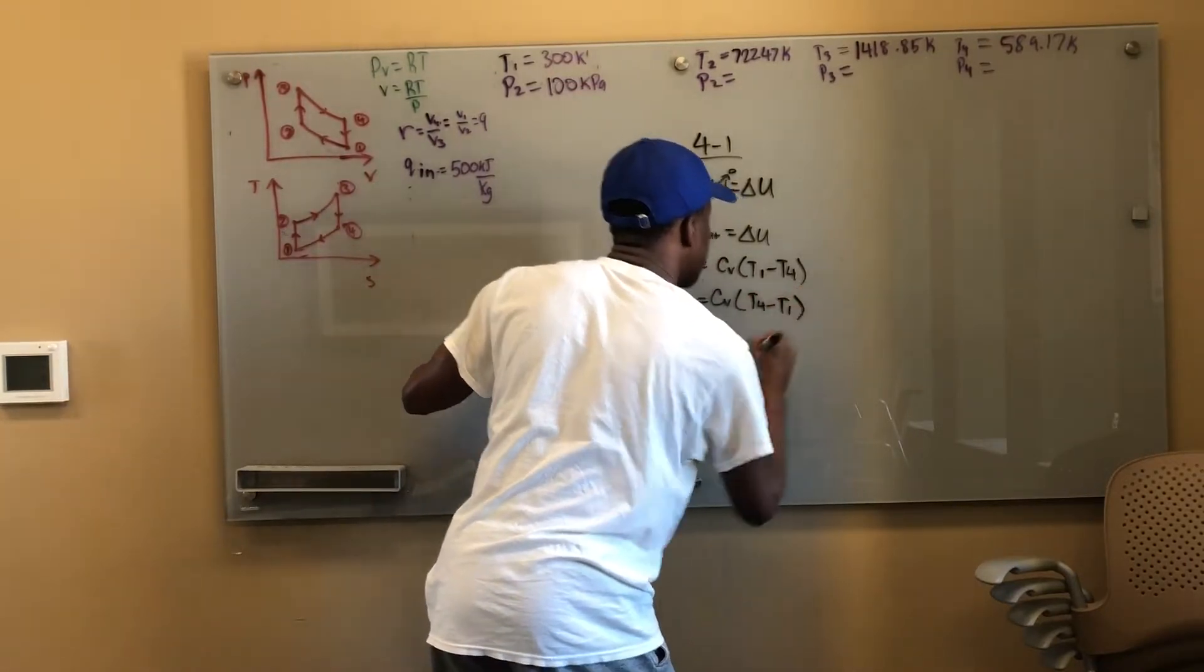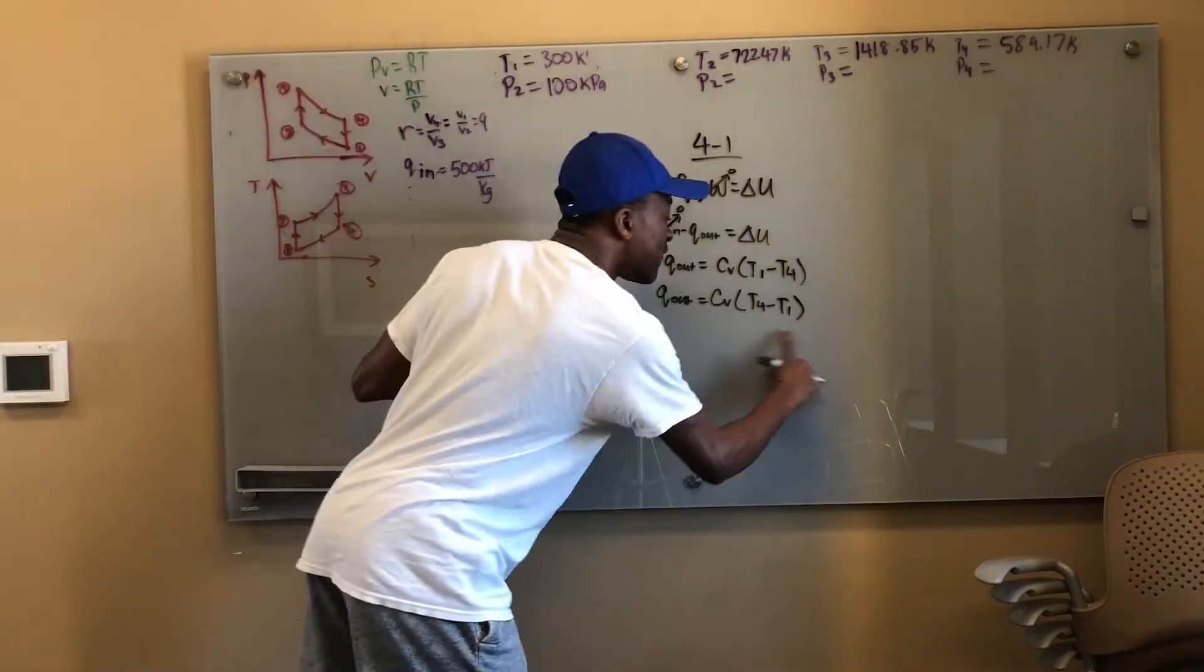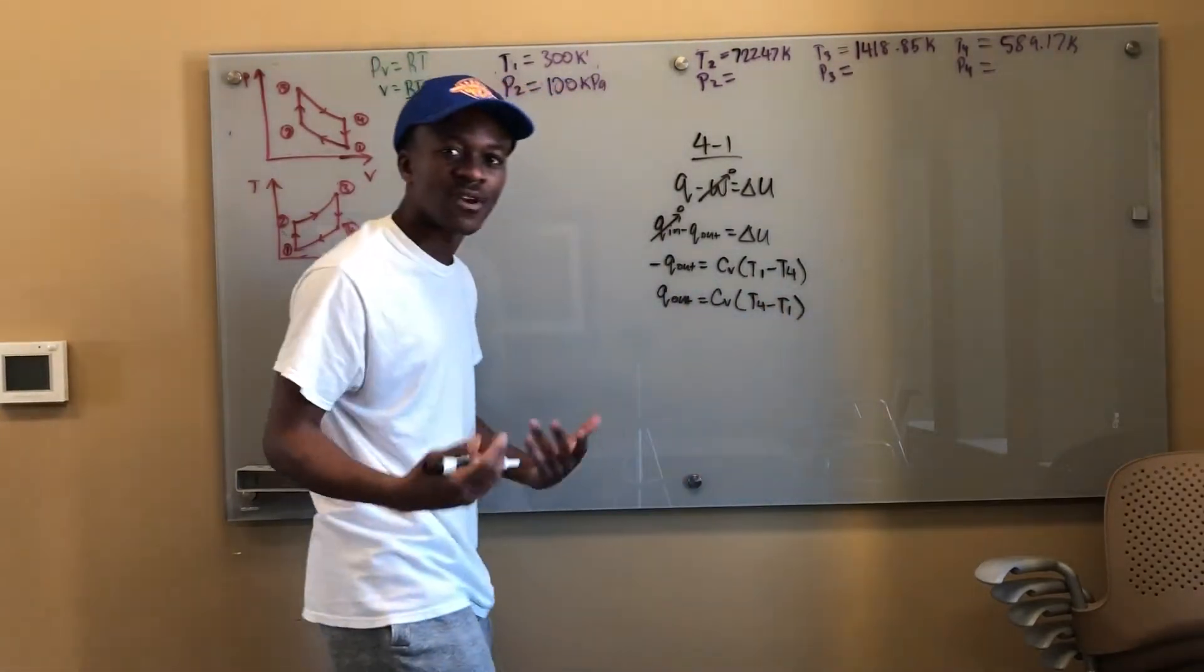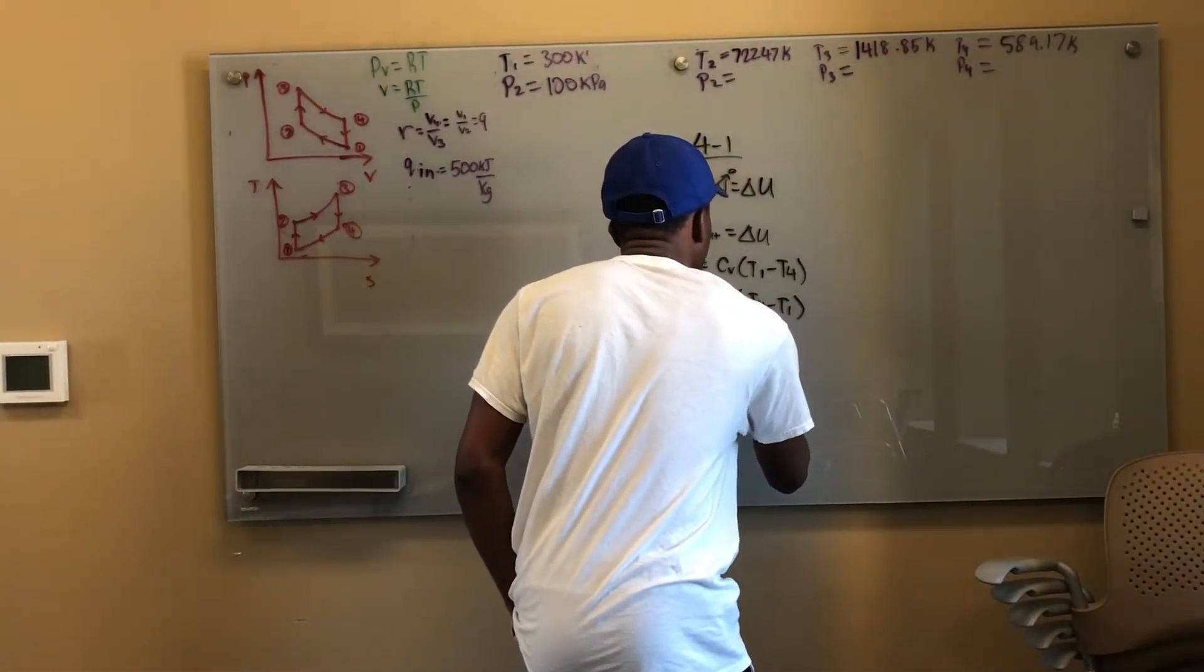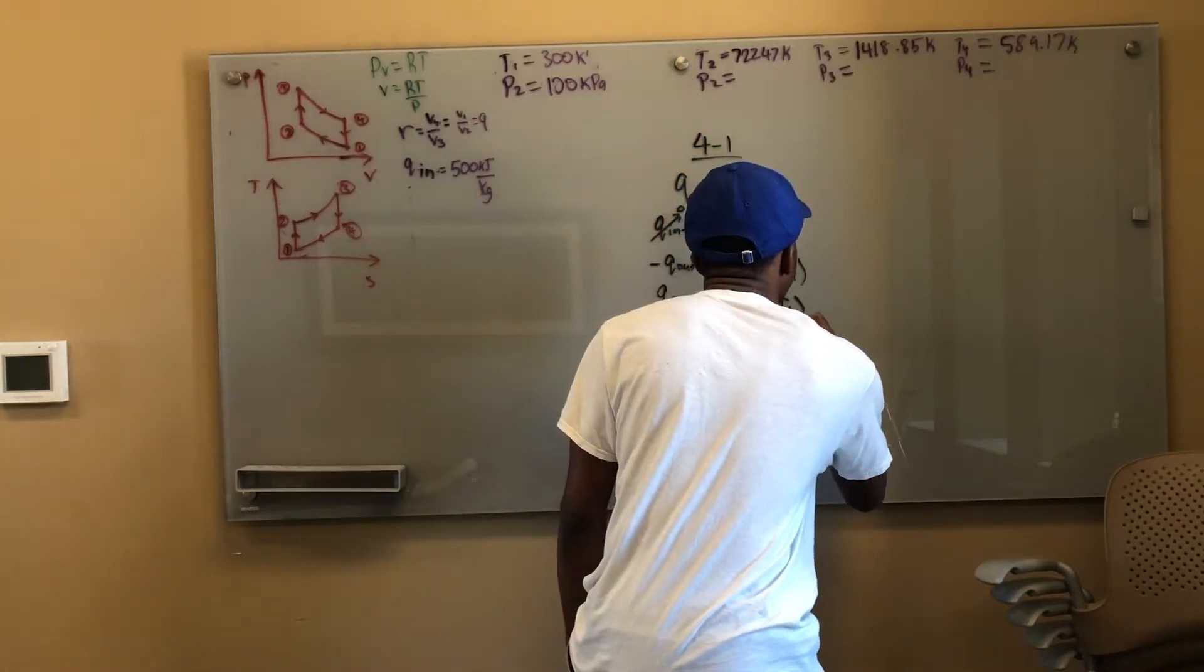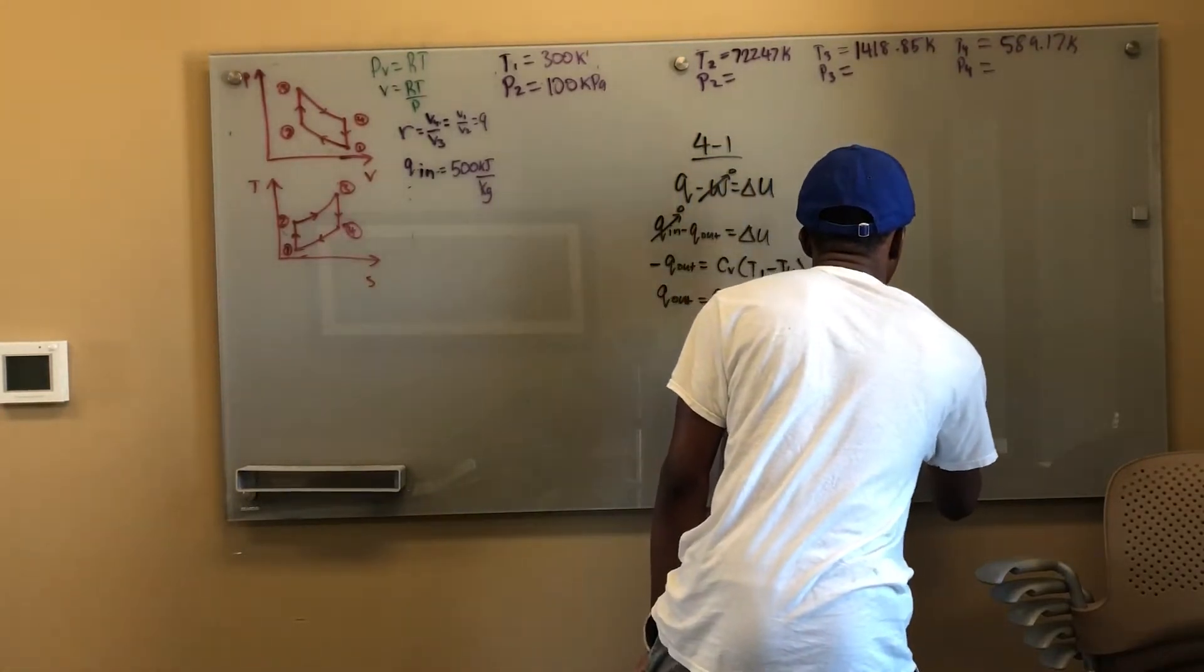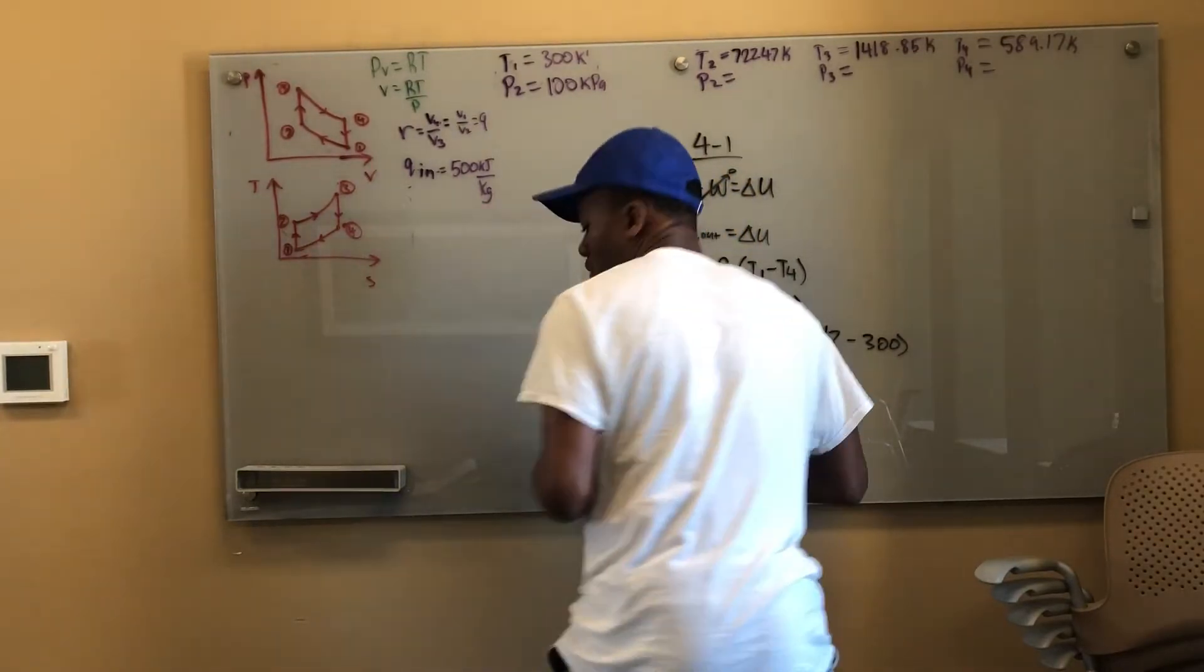Q_out is given by, Q_in is zero, c_v times T1 minus T4. And we always want to end up with a positive number. So if I multiply both sides by negative one I get the Q_out is equal to c_v times T4 minus T1. And that makes sense because T4 is higher than T1 so this difference will be positive, whereas this difference would have been negative. But because to get my positive Q_out I would have had to multiply a negative number times negative one. So c_v is 0.718, I have my T4 which is 589.17, T1 which is 300. So my Q_out is equal to 207.62 kilojoules per kilogram.